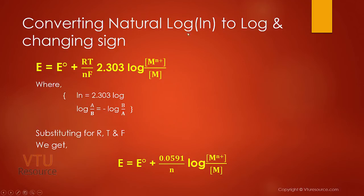Converting the natural log to log base 10 and changing the sign, we get: E equals E0 plus (RT / NF) × 2.303 × log [M(n+)]. In order to convert natural log to log base 10, we multiply by 2.303. To make the entire equation positive, we change the sign using the mathematical identity: log(A/B) equals minus log(B/A).